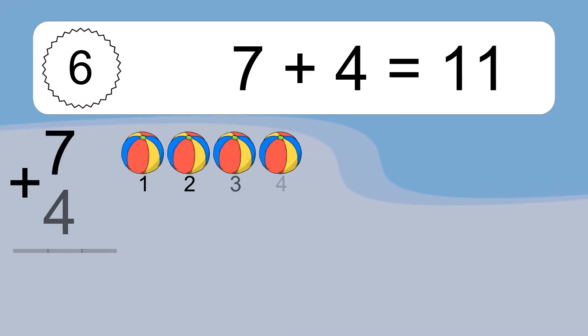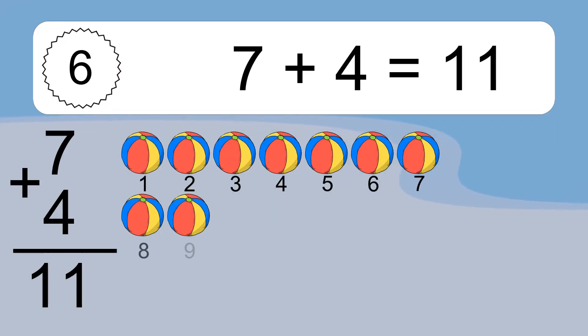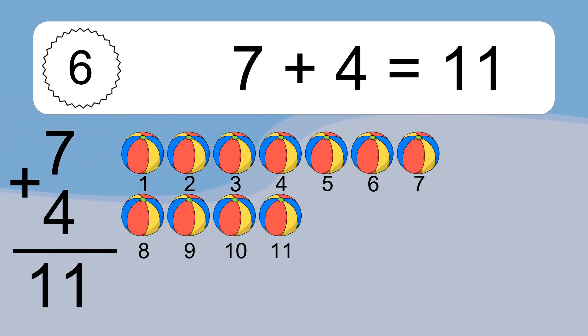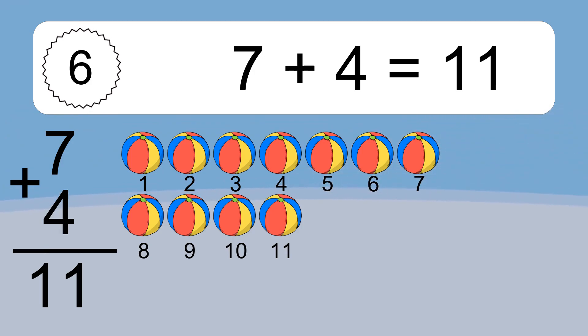7 plus 4 equals what? 7 plus 4 equals 11. Let's count it. 1, 2, 3, 4, 5, 6, 7, 8, 9, 10, 11.